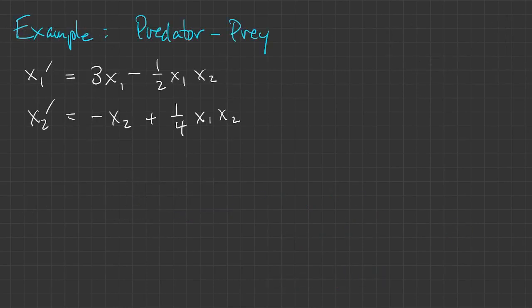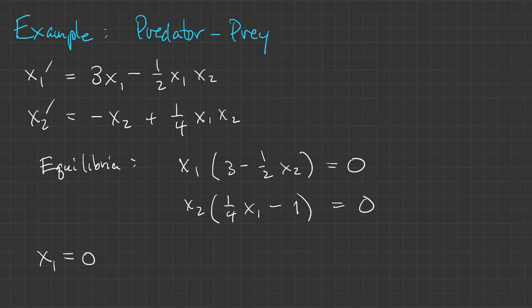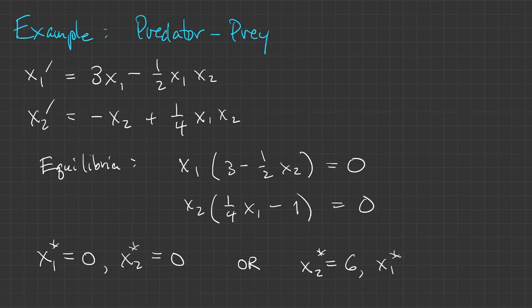Another example is the predator-prey system. At equilibrium, both X1 prime and X2 prime must be zero. In the first equation, we factor out X1; from the second, we factor out X2. One possibility is X1 equals zero, which forces X2 to equal zero as well. Alternatively, setting X2 equal to six in the first equation, the second equation tells us X1 must equal four. So we have two equilibrium points.